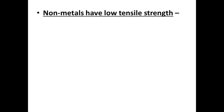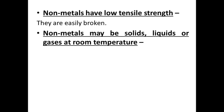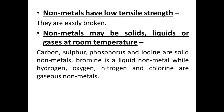Next property: non-metals have low tensile strength — they can easily be broken or stretched. Next property: non-metals may be solid, liquid, or gases at room temperature. Carbon, sulfur, phosphorus, and iodine are solid non-metals; bromine is a liquid non-metal; while hydrogen, oxygen, nitrogen, and chlorine are gaseous non-metals.